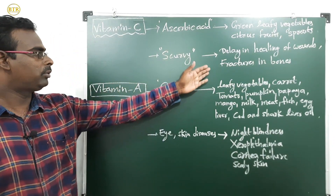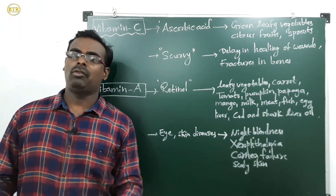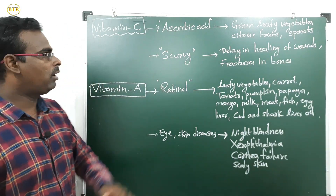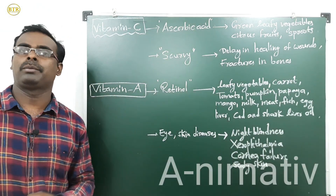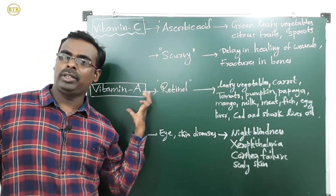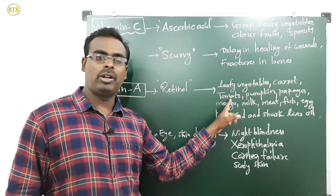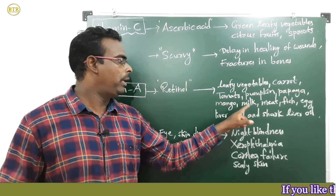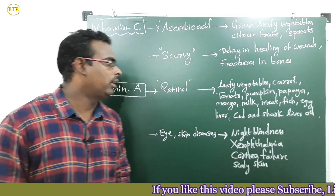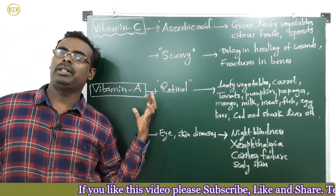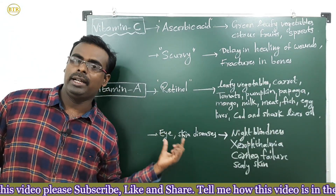Now we study fat-soluble vitamins. The first fat-soluble vitamin is vitamin A, with scientific name retinol. Vitamin A is available in leafy vegetables, carrot, tomato, pumpkin, papaya, mango, milk, meat, fish, egg, liver, cod liver oil, and shark liver oil.